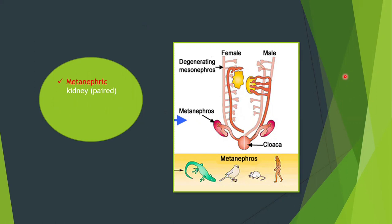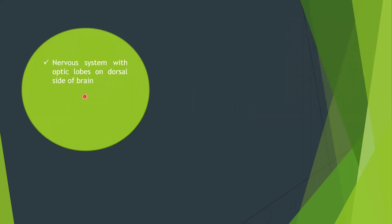Reptiles have paired metanephric kidneys. Their main nitrogenous waste is uric acid, which is excreted out.